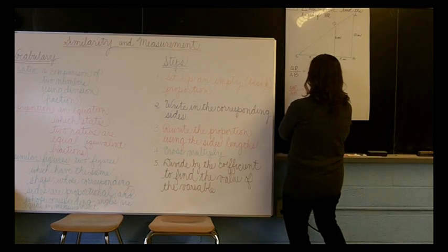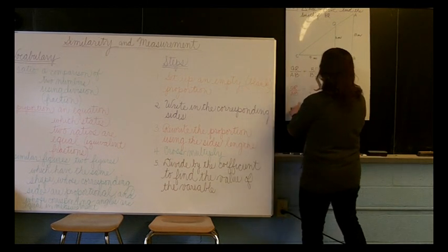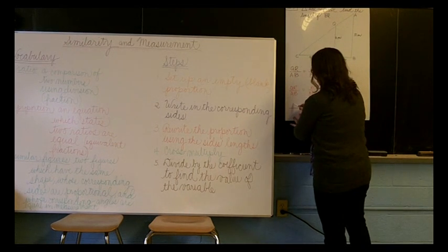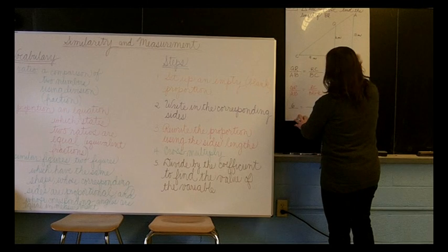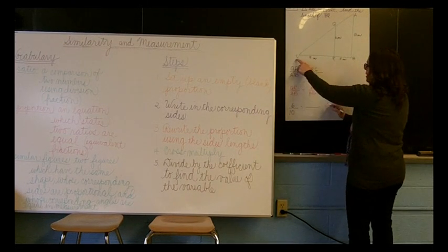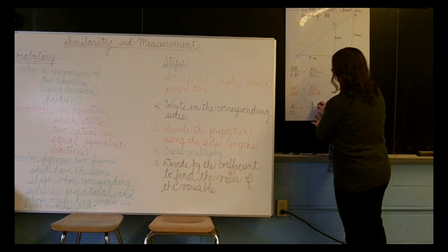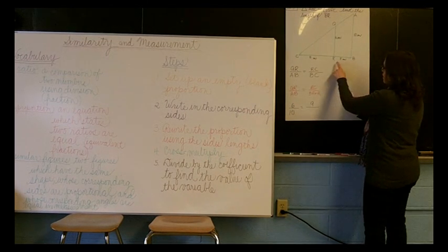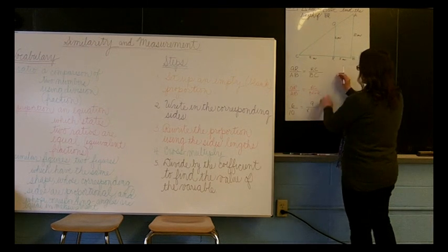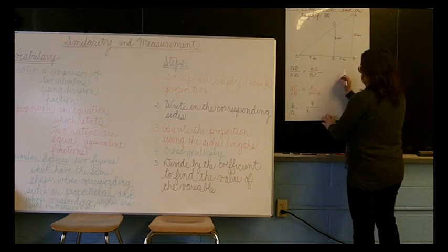Now we can fill in our numbers. So QR is 6 meters long, and AB is 10. RC is 9 meters. Now BR is X, and we're adding to that the 9 meters for RC.